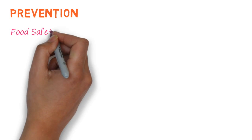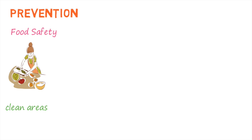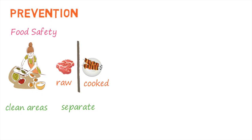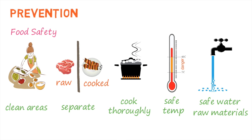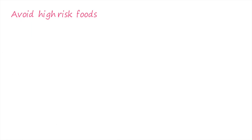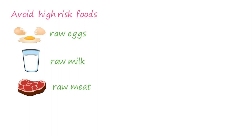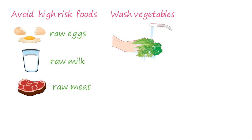Because Salmonella is mainly a foodborne disease, one of the most important ways of preventing it is ensuring the safety of food. This includes making sure food preparation areas are clean, separating raw and cooked food to prevent cross-contamination, cooking food thoroughly, keeping food at the correct temperature, and using safe water and raw materials. High-risk foods like raw eggs, unpasteurized milk, and raw meats should be avoided. Fruits and vegetables should be washed carefully, especially if eaten raw.